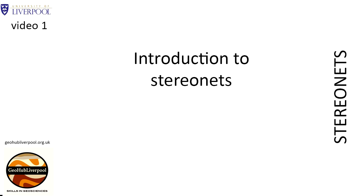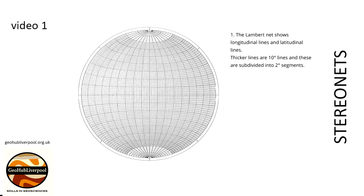Places on the StereoNet are positioned using the lines marked on the StereoNet. The Lambert net shows two sets of lines which are similar to the imaginary latitudinal and longitudinal lines drawn on the globe and on world maps.